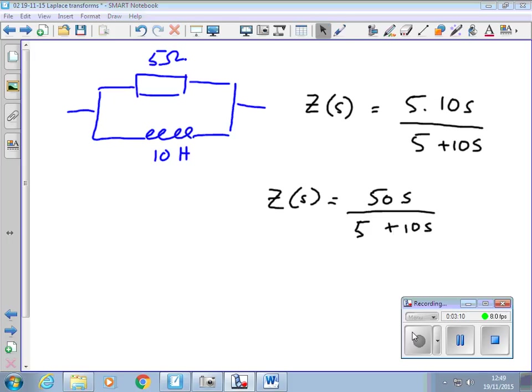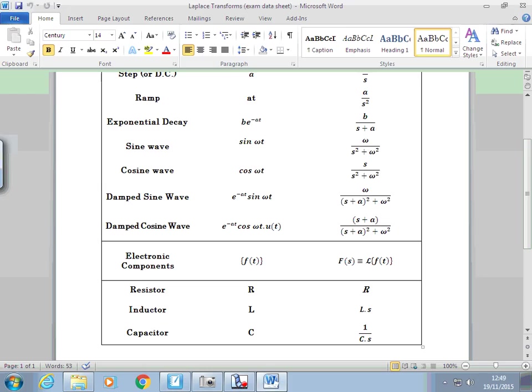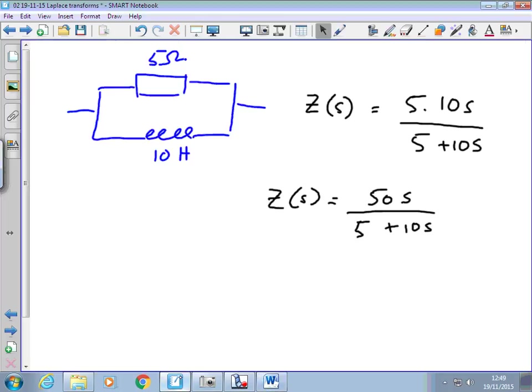But, if we look at our transforms here, we notice, and remember from last week, that they all involve just S. There's no number in front of the S. So, the first thing I want to do is try and get rid of the 10 that's in front of S. So I divide by 10 to get rid of it. But that means I have to divide every term, top and bottom, by 10 to get rid of it.